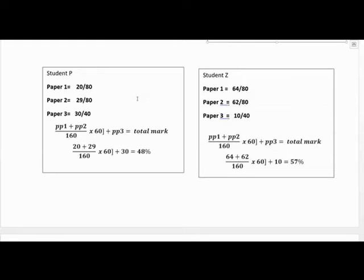Let's compare Student Z and Student P. Student P is not good in Paper 1 or Paper 2, but tries very much in Paper 3 to score 30 out of 40. The student ends up getting 48 percent, while the student who is very good in Papers 1 and 2 scores 57 percent. They have left each other with only 9 marks. You can see how important Paper 3 is, whether physics, biology, or chemistry.